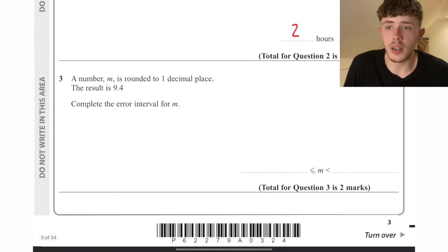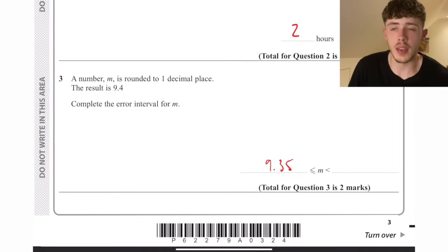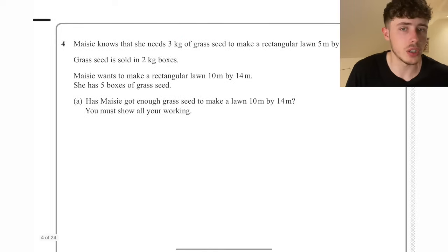A number is rounded to one decimal place, the result is 9.4. Complete the error interval for m. The lower bound is going to be 9.35, the upper bound 9.45. That's quite a general question.